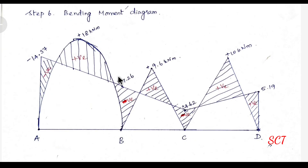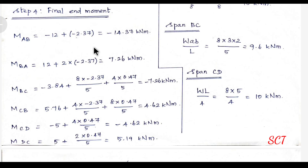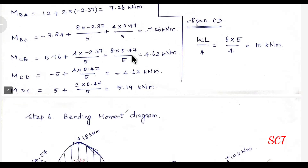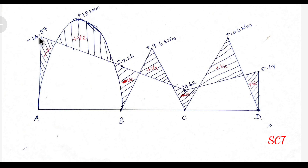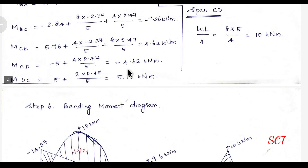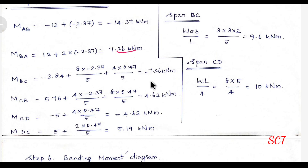Now we have the bending moment diagram. To analyze this diagram, we use the fixed end moments. Looking at the first fixed end moment: MFAB at A point value is minus 14.37, so that is minus 14.37. For M_BA, this is plus 7.26 on one side and minus 7.26 on the other side - the same value. We connect with the free bending moment values.